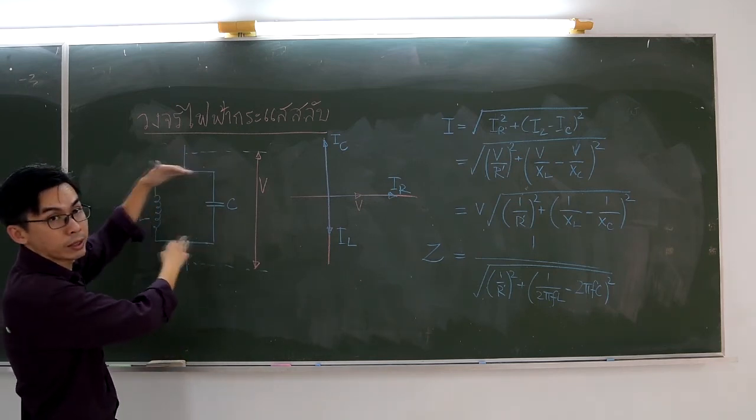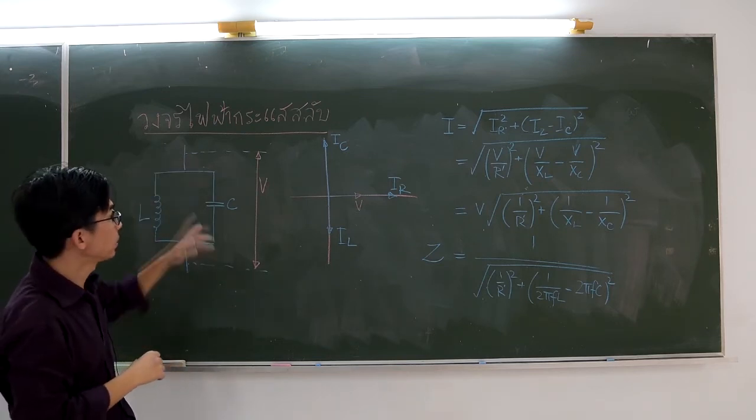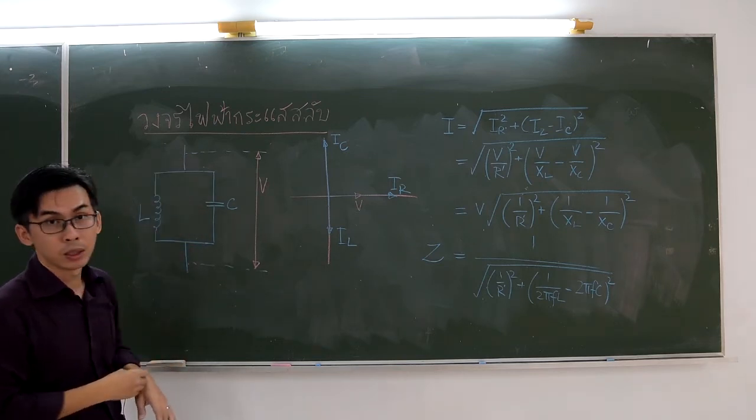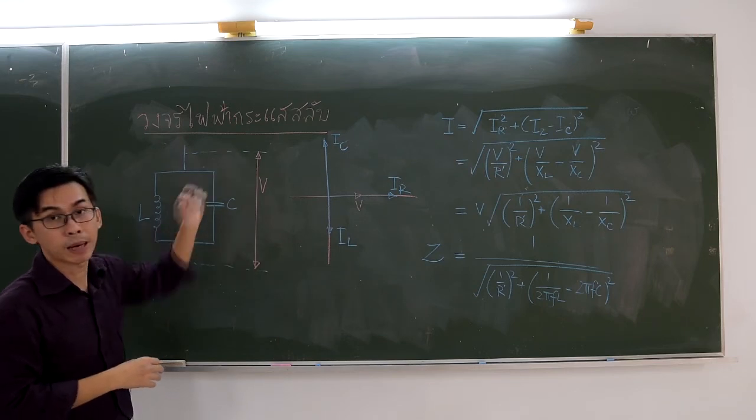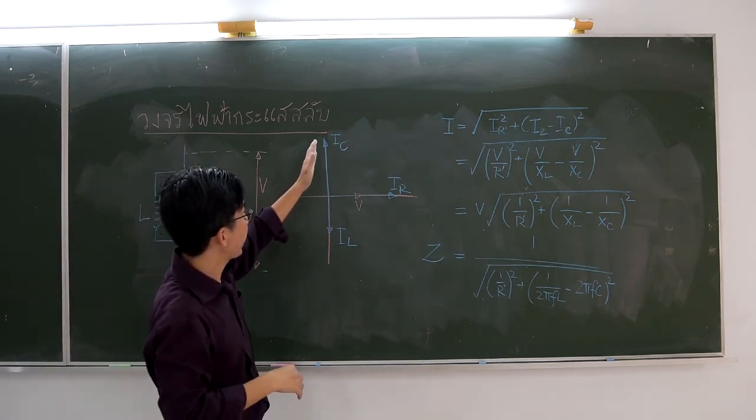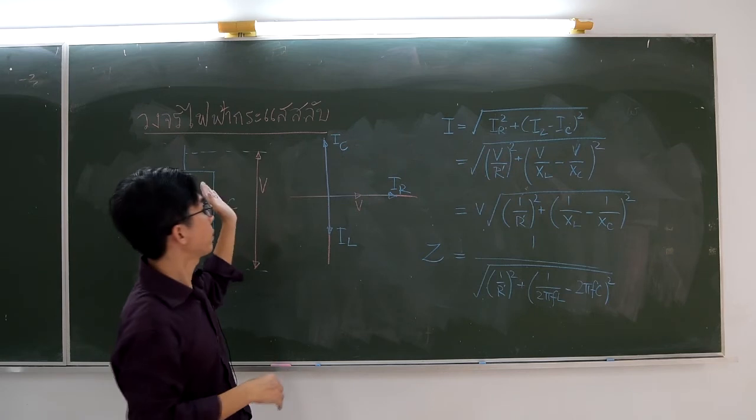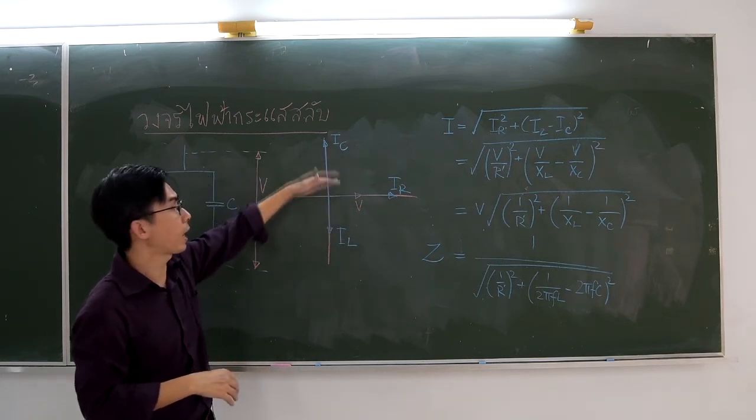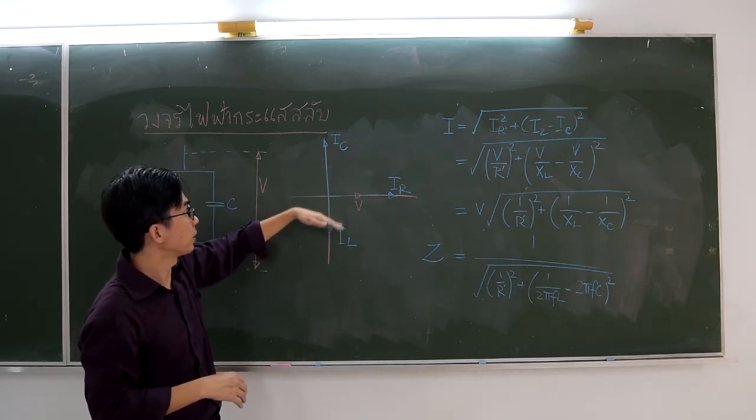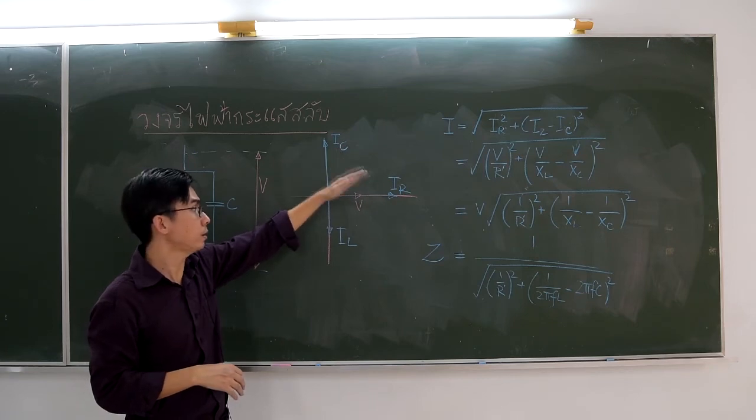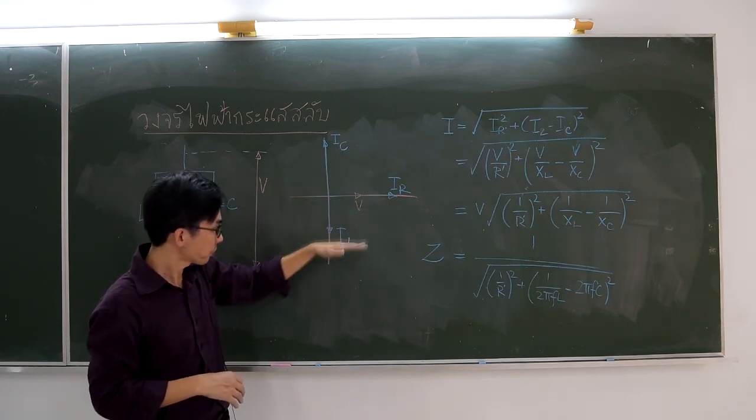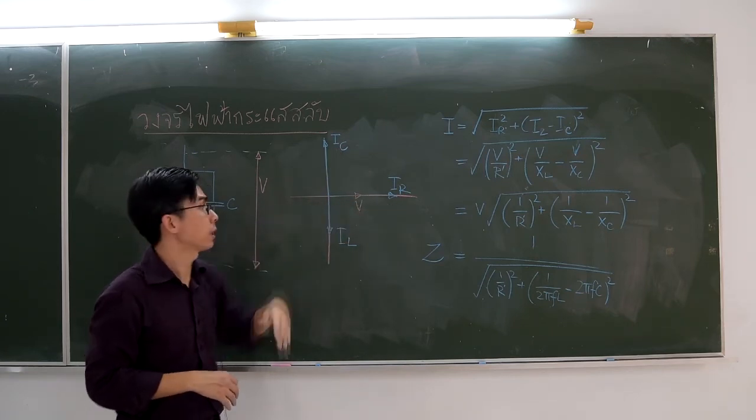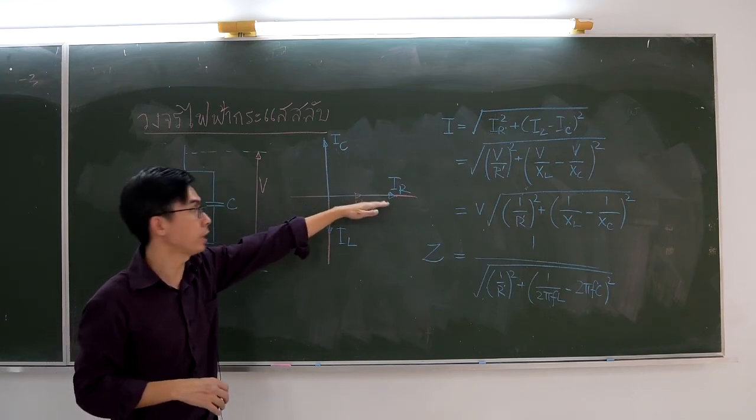In parallel circuits, we know that the voltage across each device is the same. However, the current flowing in each element differs. First, we find that IC leads IR, where IL lags IR, and IR is in phase with VR.